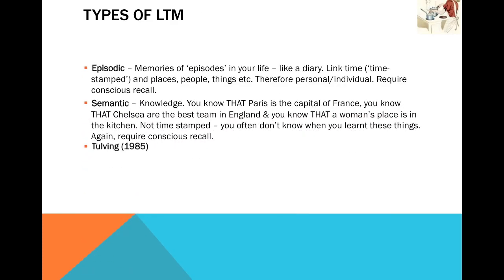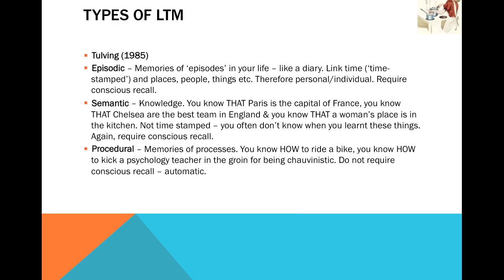It was Tulving who suggested there are three different types of long-term memory. The first is episodic memory — 'episodic', like episodes, like a diary entry. Episodic memory has time stamps, so you know when things happened and can recall places, people, and events. Think about what you did for your last birthday: you go back in time to a certain point in your life, like a diary entry, and hopefully you'll know who you were with, where you were, and what you did. That is an episodic type of long-term memory.